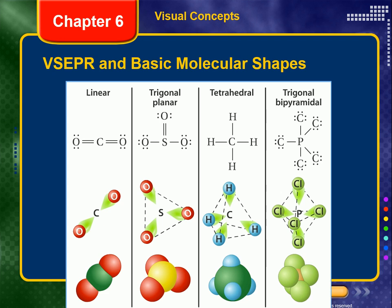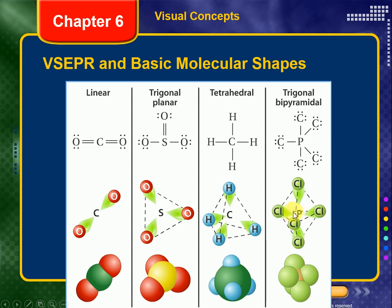With a central phosphorus atom and five chlorine atoms surrounding it — note there is a typo in the graphic; all surrounding atoms should be Cl, not C — the way that the bonding electrons can spread out maximally is by forming what's called a trigonal bipyramidal shape.